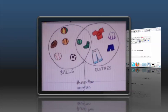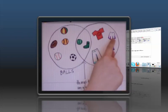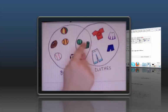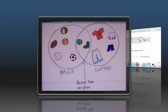I found out in the book about clothes that there are t-shirts, skirts, shorts, pants, and socks. What do these two groups of balls and clothes have in common?